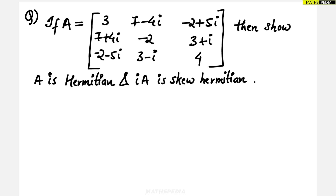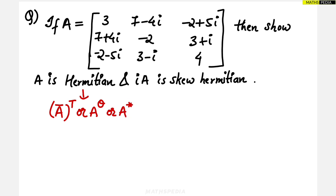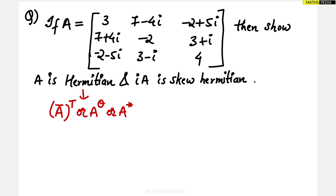First you have to understand what is Hermitian and skew-Hermitian — that's the most important thing. Whenever they give you a matrix and we have to show it is Hermitian, the basic idea is the conjugate transpose, represented by A^θ or A*, meaning we first find the conjugate then take the transpose. The conjugate transpose of A should be equal to A.